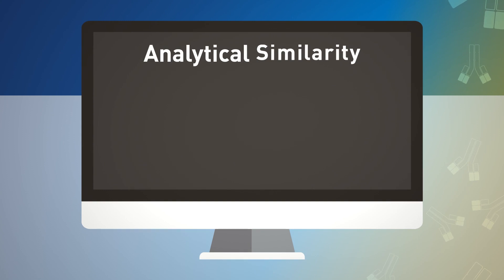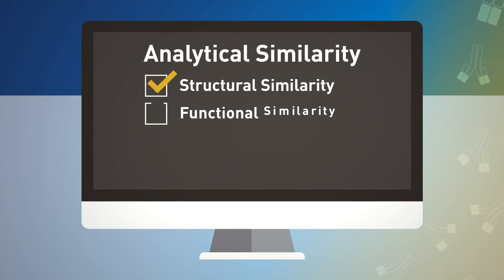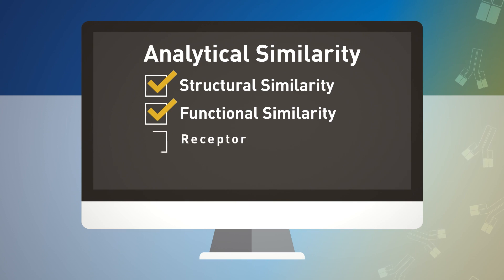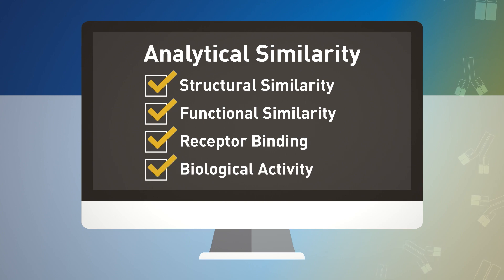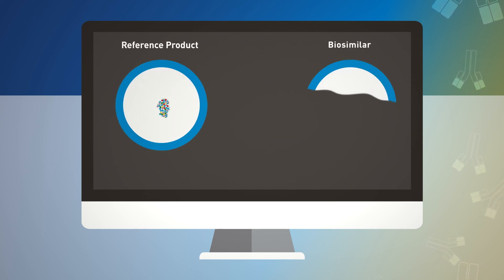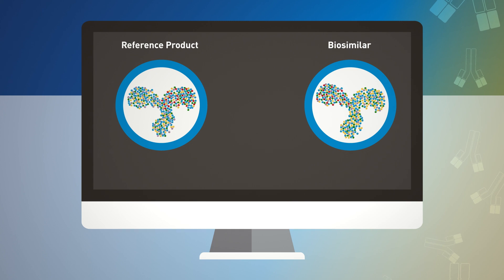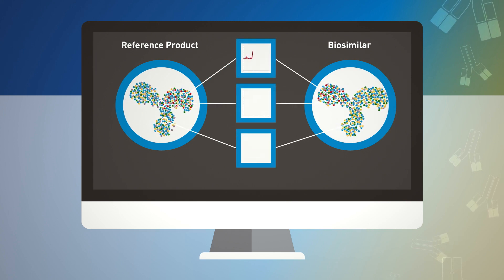By showing that the molecule being developed has highly similar structure, very similar function, may bind the same receptor in the same way as the reference product, and will have the same biological activity in terms of activating living cells in a model — all those things together really give you the starting point that the biosimilar candidate will act the same way as the reference product in patients.